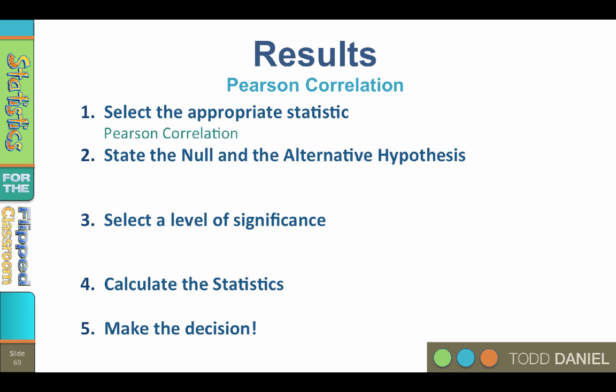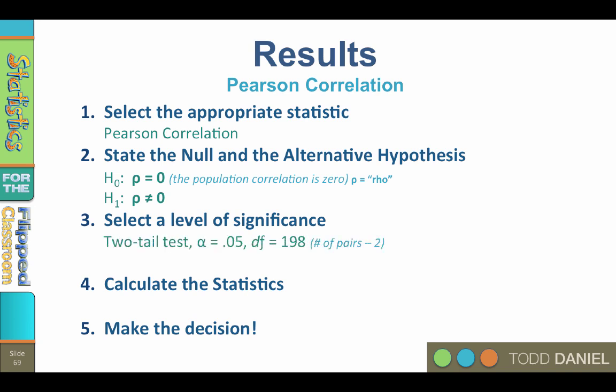Step two: state the null and alternative hypothesis. The null hypothesis is that the population correlation is zero for each pair, so we would write H-sub-zero: rho equals zero, where rho is the Greek letter for r. The alternative hypothesis would be H-sub-one: rho does not equal zero. Step three: select a level of significance. For a two-tailed test, alpha equals 0.05, degrees of freedom 198 — which is the number of pairs minus two — and the critical value is positive or negative 1.98, calculated from the t-table.